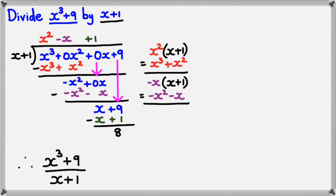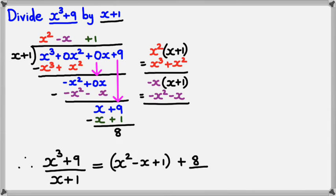So, x cubed plus 9 divided by x plus 1 gives a quotient of x squared minus x plus 1, plus the remainder 8 divided by the divisor x plus 1. Alright guys, that's about it for long division. Hopefully you've got all the ideas here for long division with algebraic terms. Thanks for watching.